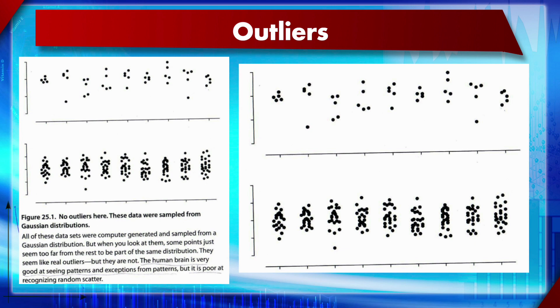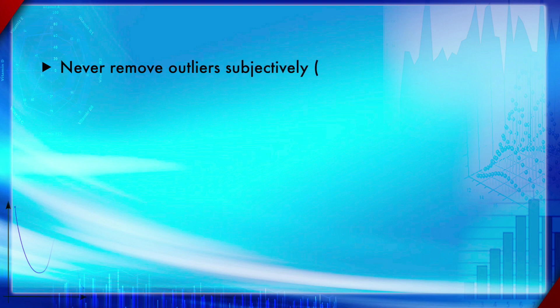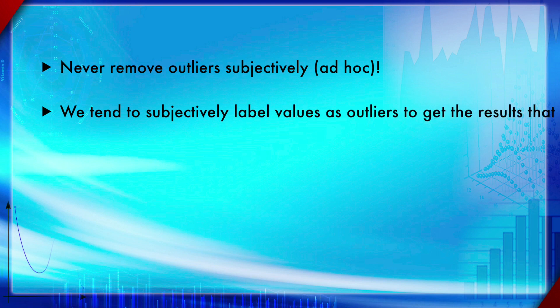Never remove outliers subjectively — ad hoc removal is wrong. It can also be termed as cheating or scientific misconduct, because we tend to remove outliers that affirm the hypothesis we would like to prove. That kind of ad hoc removal is not recommended at all. We tend to subjectively label values as outliers to get the results that we want — that is exactly the problem.